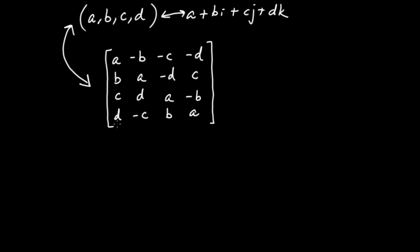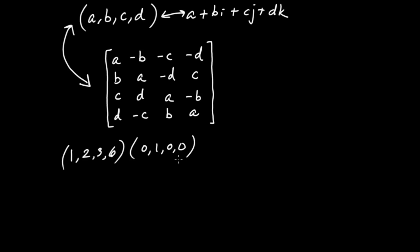Let me show you what a calculation might look like doing it as a four-by-four matrix. Let me just make up a quaternion — let's say 1, 2, 3, 6 — and I'm going to multiply it by just a pretty simple quaternion, 0, 1, 0, 0, which is also equal to i. Now let me convert this to the matrix form. Notice that the first column is just writing this quaternion as a column vector: 1, 2, 3, 6.